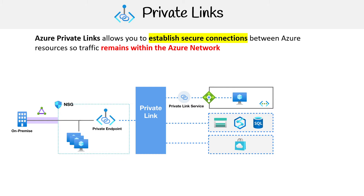Let me pull out my pen and define a few things. Imagine you have workloads on your on-premises environment, or you have your own virtual network on Azure with some VMs doing some stuff. The idea is that you want to connect them to some other services.